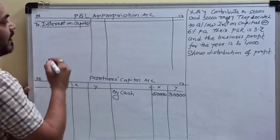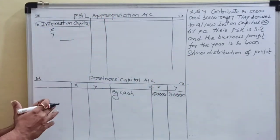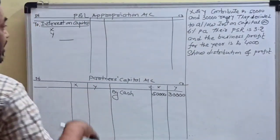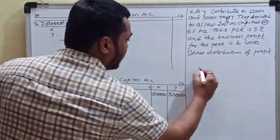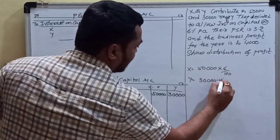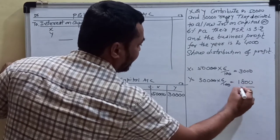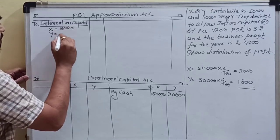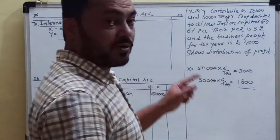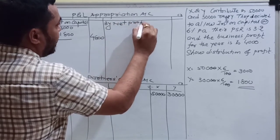Interest on capital: we do not know the exact date when the amount was contributed, so we assume it was contributed at the beginning of the year. Therefore, we charge interest on capital for the full year. X's interest: 50,000 × 6% = 3,000. Y's interest: 30,000 × 6% = 1,800. Total interest on capital = 4,800.